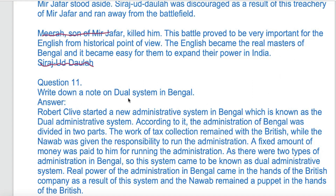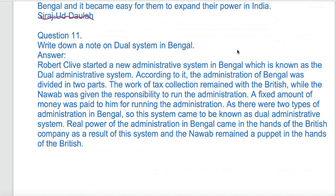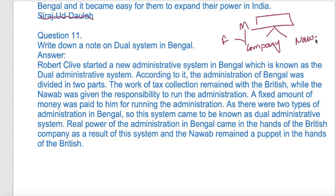Write a note on the dual system in Bengal. Bengal had a dual administrative system started by the company, which had control over finance and military as well as civil administration. This new administrative system in Bengal is known as the dual administrative system.